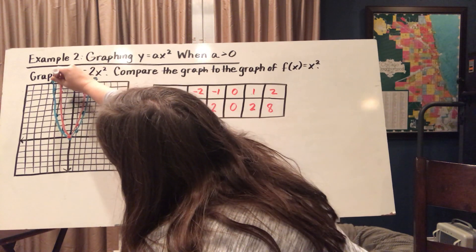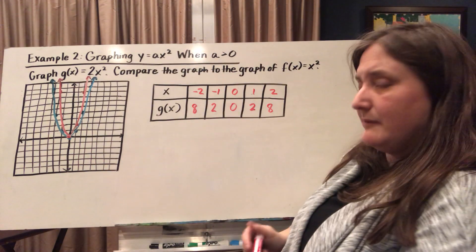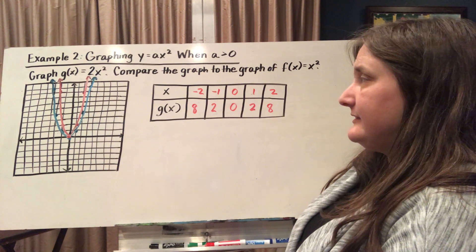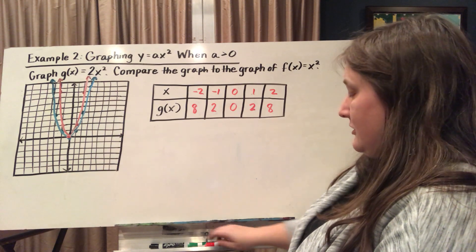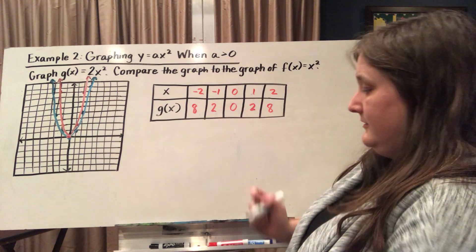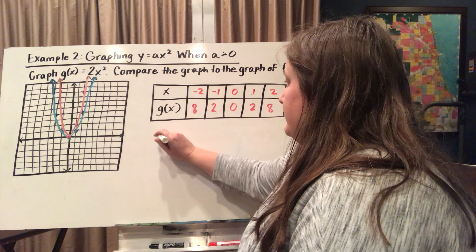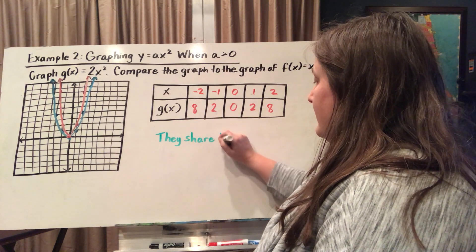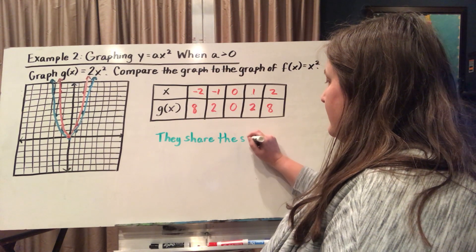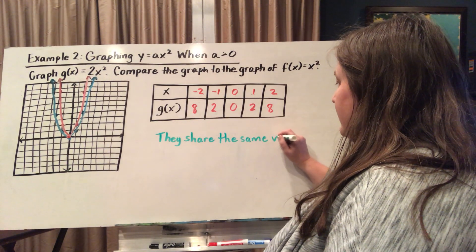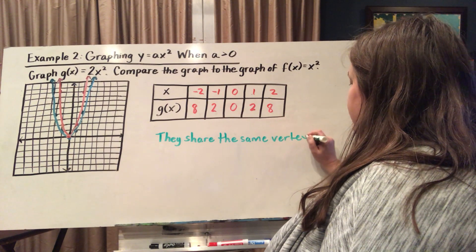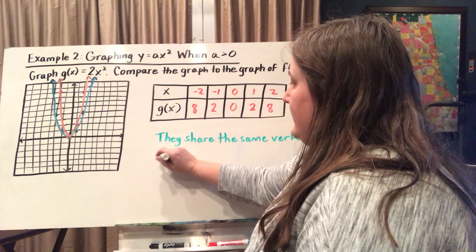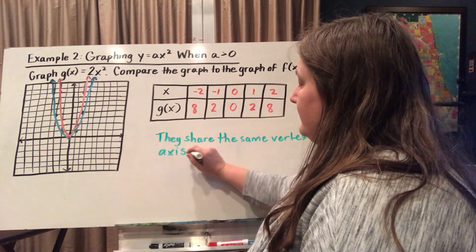And I'm being asked to compare these two graphs. So some things that I notice is they share the same vertex and the same axis of symmetry. In this case, the vertex is 0, 0, and the axis of symmetry is at x equals 0.